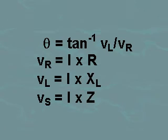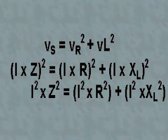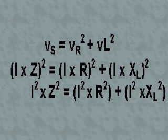Squaring the three above equations, and since we know that V sub S squared equals V sub R squared plus V sub L squared, we get I times Z squared is equal to I times R squared plus I times X sub L squared. Or, I squared times Z squared is equal to I squared R squared plus I squared times X sub L squared.